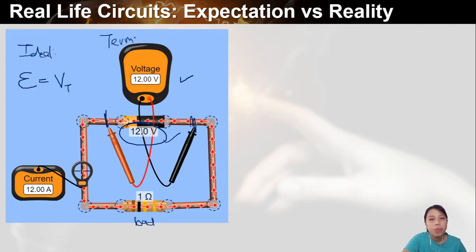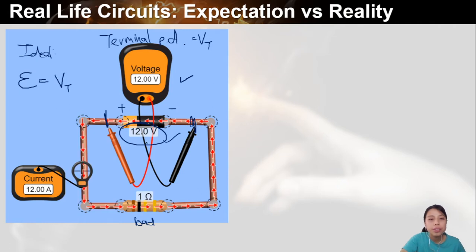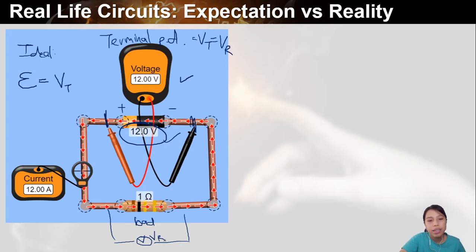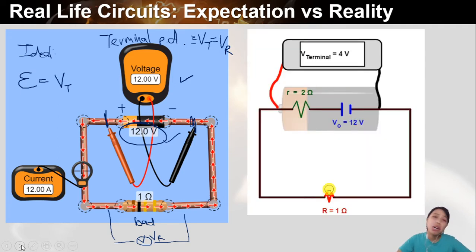Terminal means the battery terminal — positive terminal, negative terminal. This terminal potential difference is also the potential difference across the whole circuit resistance. I'll call this VR. You should know this from before. But in real life, your battery is not perfect.